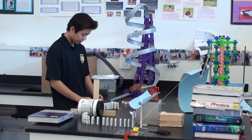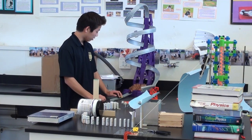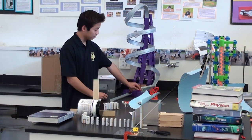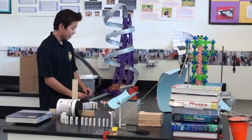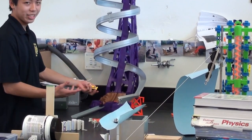This is our Rube Goldberg project. Here we have our car, which we will roll onto this ramp, which is the electric circuit. That's the electric circuit part of our experiment, our project.